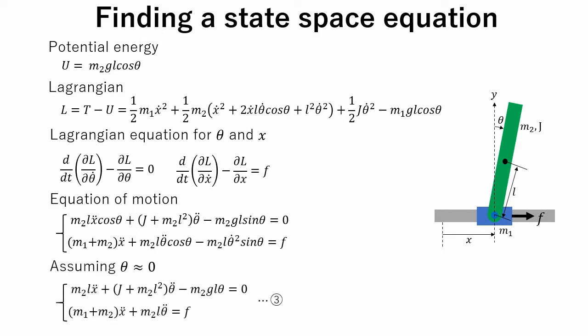To make the calculation easier, we assume that theta is nearly 0. This means that cosine theta will be nearly equal to 1, and sine theta will be nearly equal to theta. Note that this assumption is valid only when theta is very small, and if theta becomes bigger, this assumption is not accurate anymore.